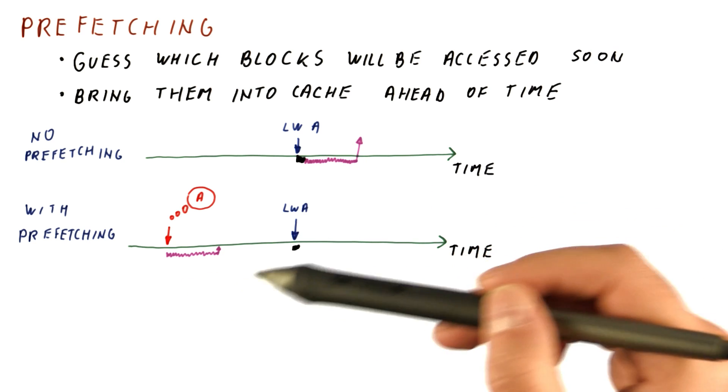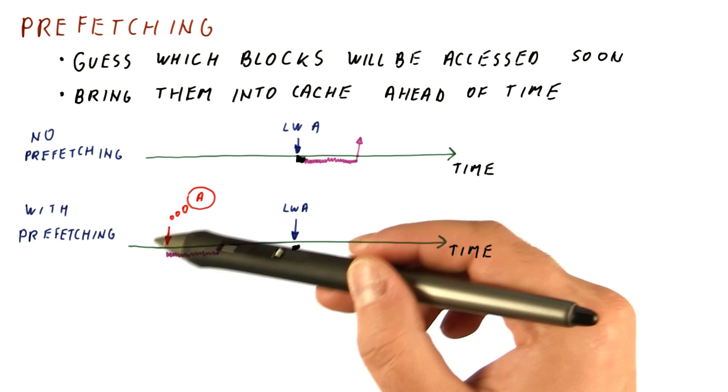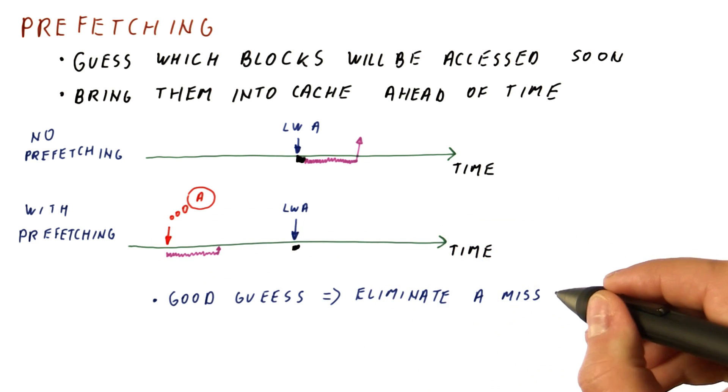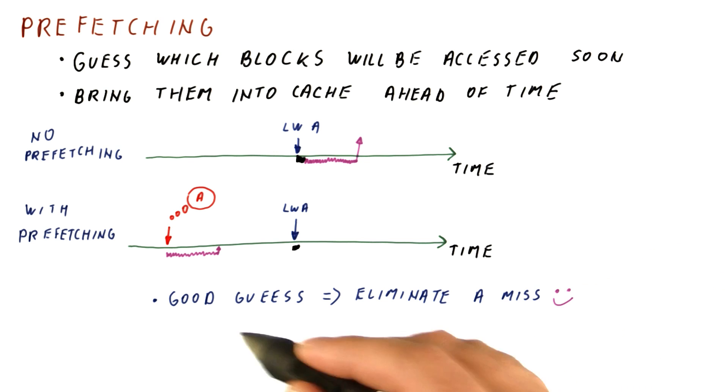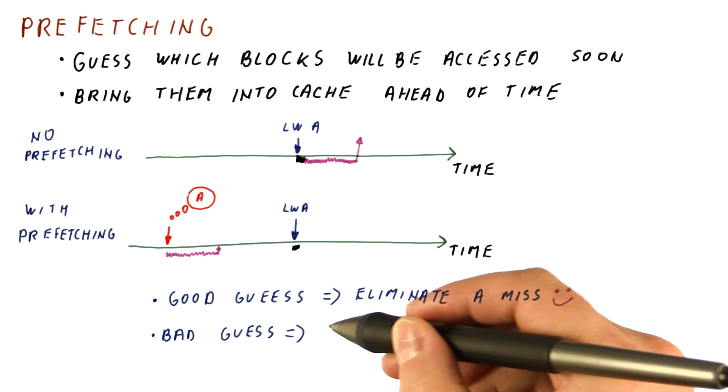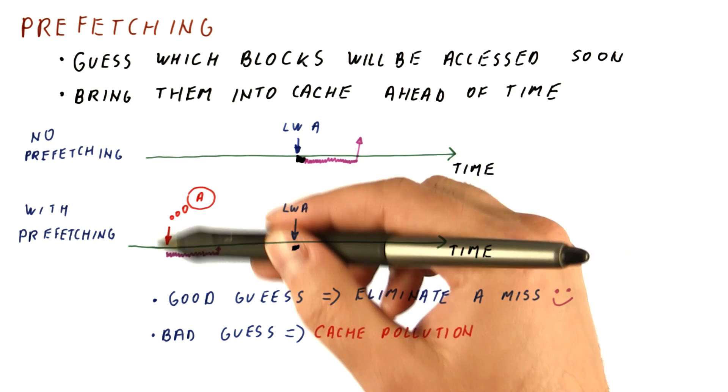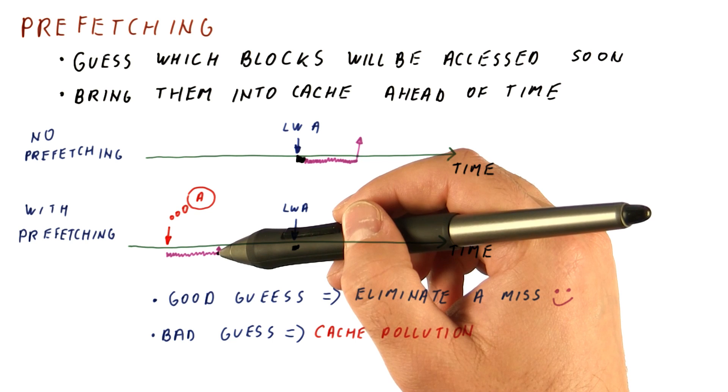If we guess incorrectly, we brought something into the cache that replaced something that might have been useful. So with prefetching, we have that good guesses will eliminate misses, but bad guesses lead to what is called cache pollution, because we are bringing stuff that is useless into the cache.